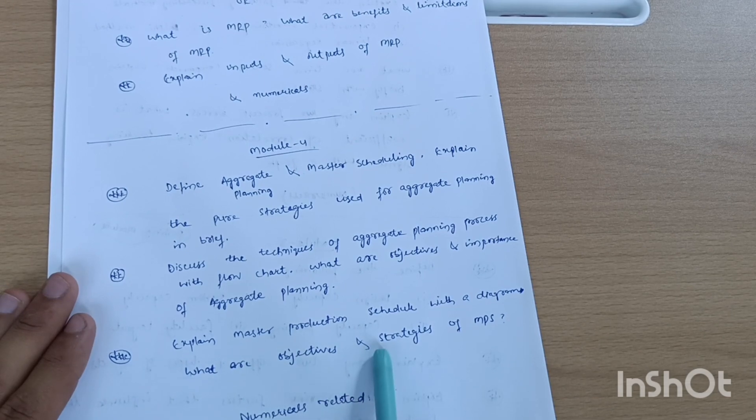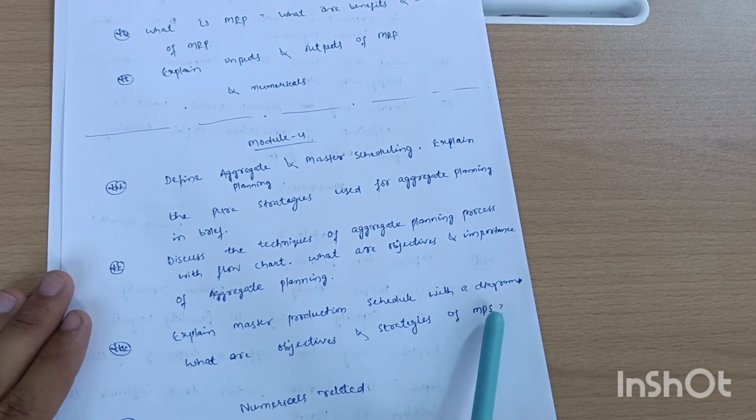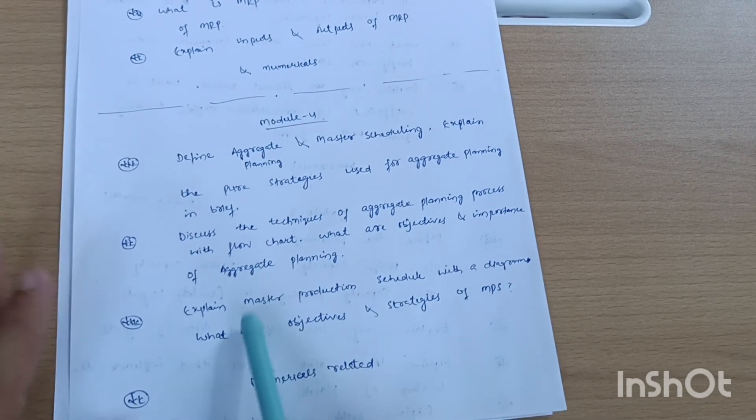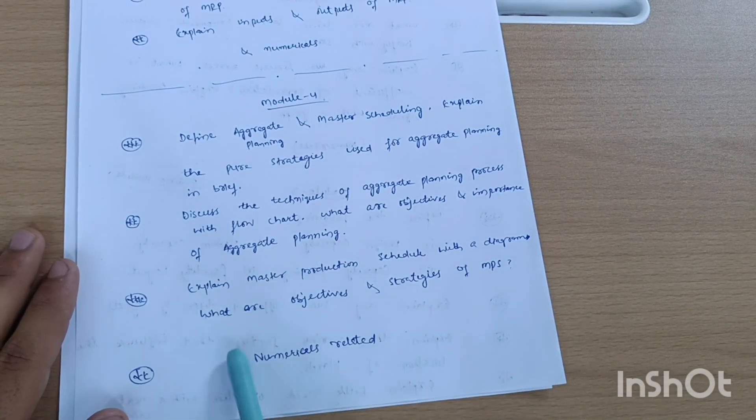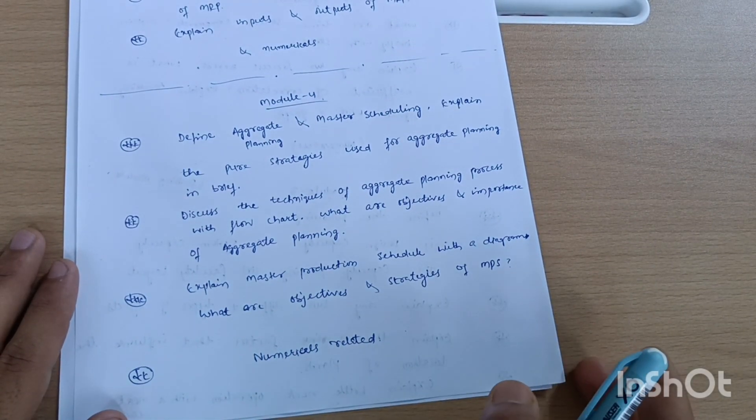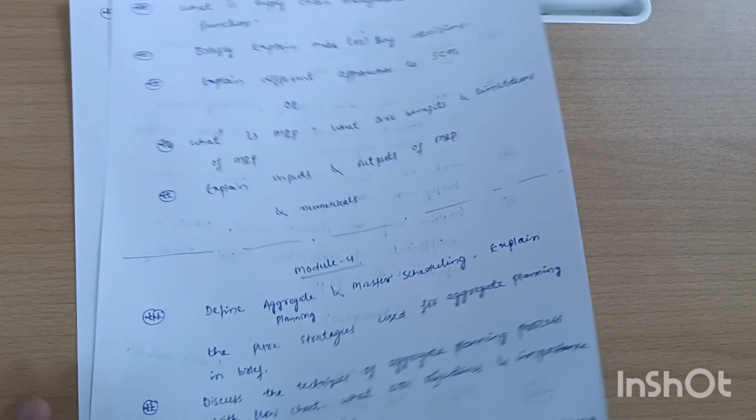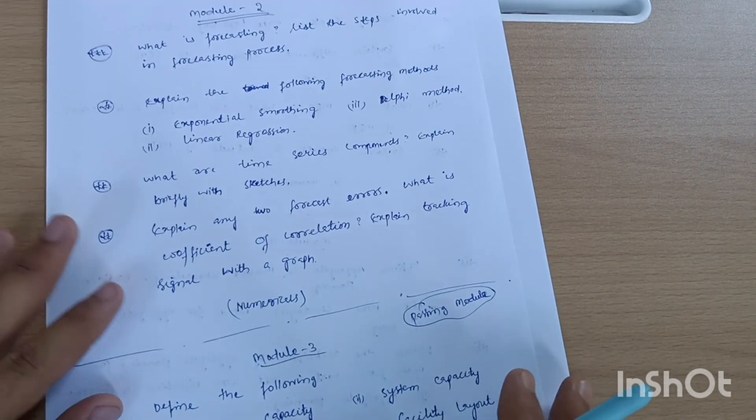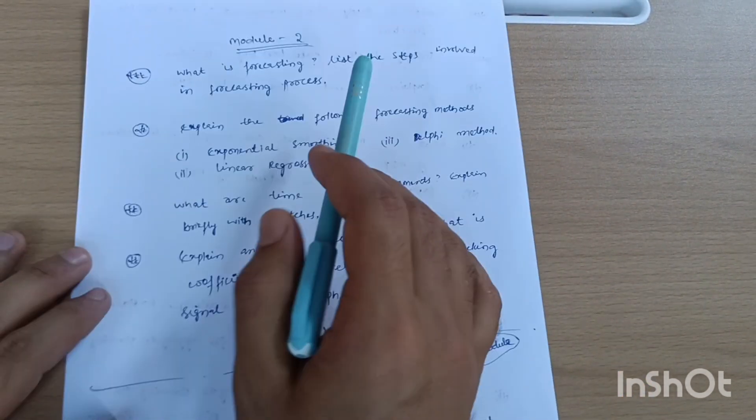Explain master production schedule with diagram. What are objectives and strategies of MPS? These are the three theoretical questions you have to cover from Module 4. Rest of the numericals you can go through 18ME56 paper. Surely go for that so you will get idea how problems are asked in the operations management subject.